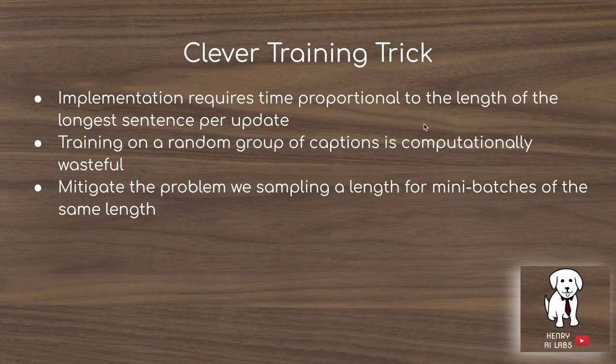One other clever training trick they describe is that when you're training these image captioning systems, you have your mini-batch for stochastic gradient descent. If one caption is much longer than others, the shorter captions are going to have to wait for it to be finished. So what they do is they construct a dictionary and batch together the caption images that have the same length to speed up training.